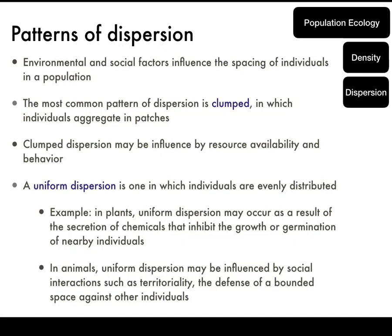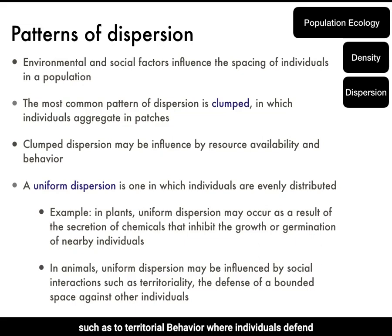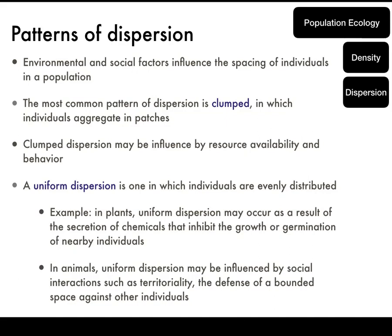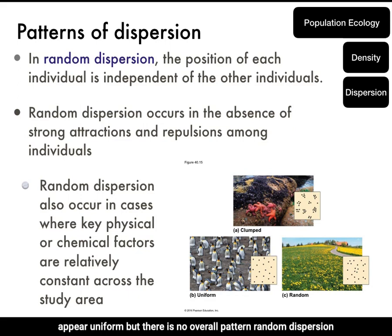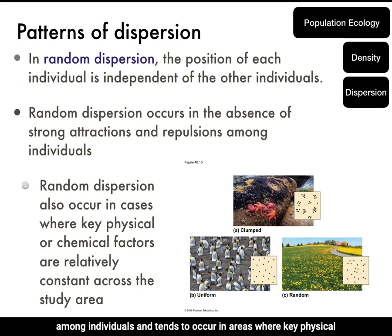In animals, uniform dispersion may be influenced by social interactions such as territorial behavior, where individuals defend an area against intrusion by others. Random dispersion occurs in the absence of strong attractions or repulsions among individuals, and tends to occur in areas where key physical or chemical factors are relatively constant across the study area.